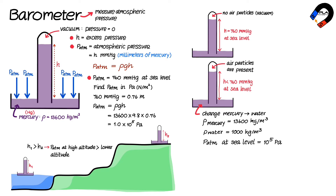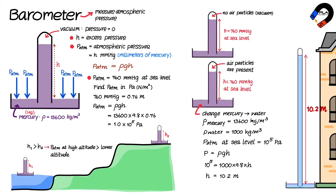using p = ρgh. Substituting the values p = 10⁵, ρ = 1,000, and g = 9.8 into the equation results in h = 10.2 meters, which is approximately the height of a three-story building.